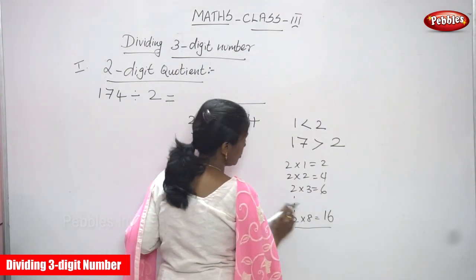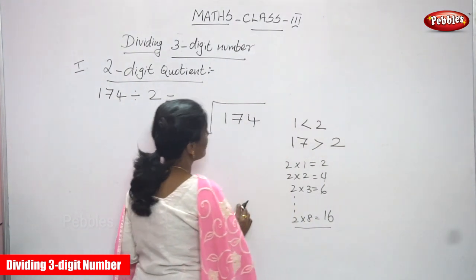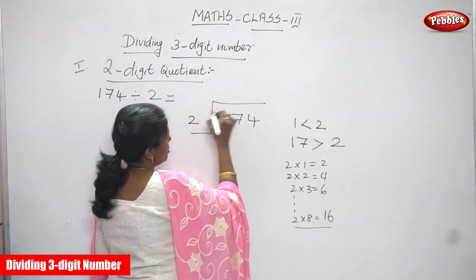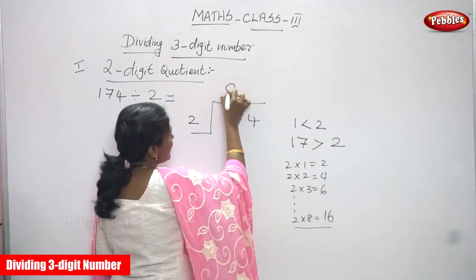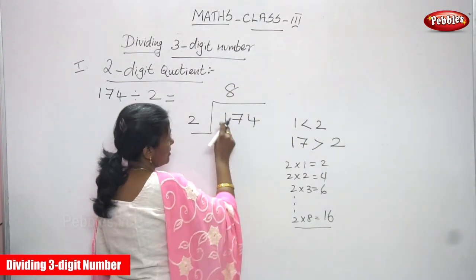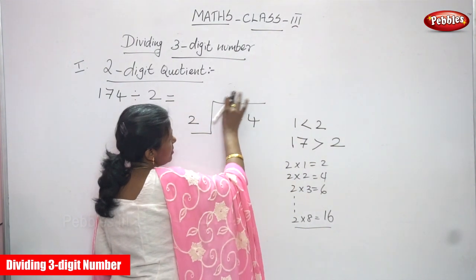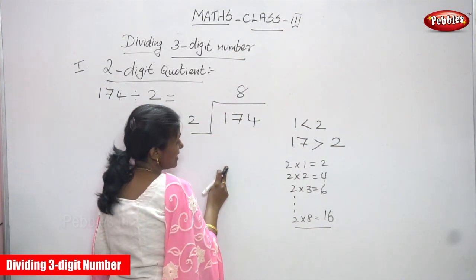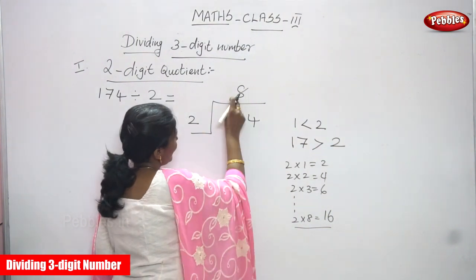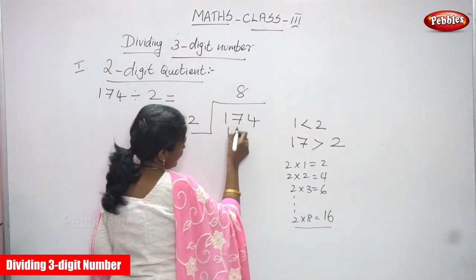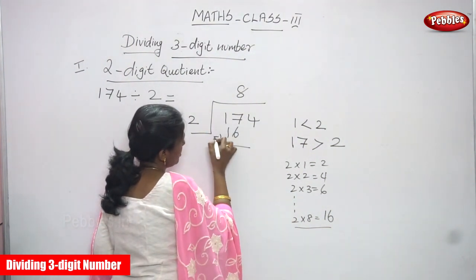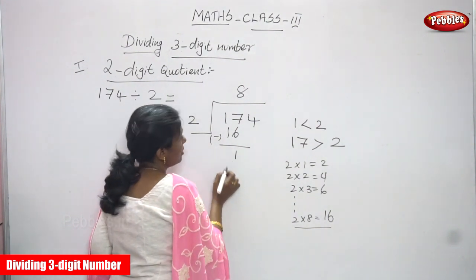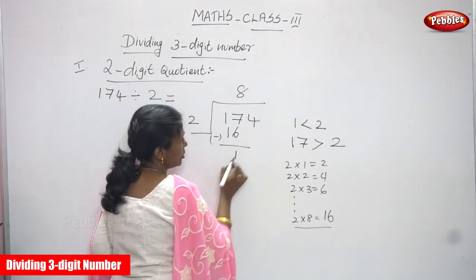You must stop because you have to write a number less than the dividend. So 2 eights are 16 — write 8 in the 10's place value. Now subtract: 17 minus 16. 7 minus 6 gives you 1, and 1 minus 1 gives you 0, so no need to write that.